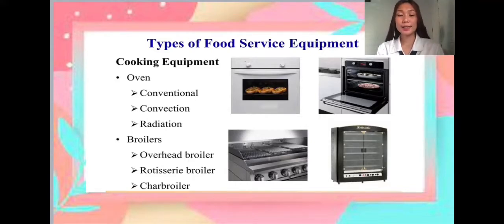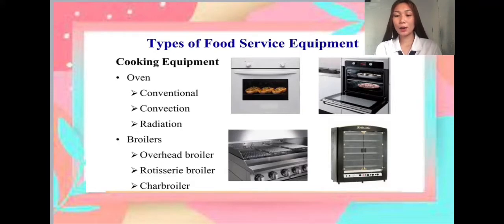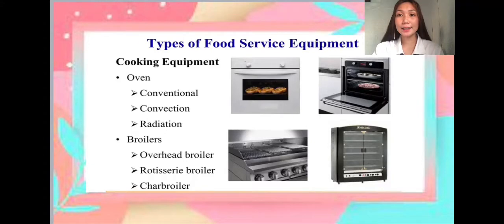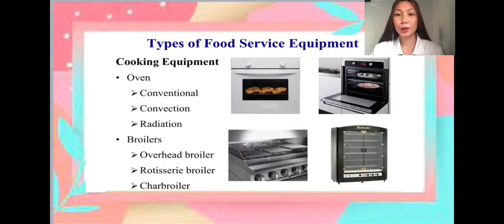Next are broilers. A broiler is an element in an oven, usually located near the top, that provides high, direct heat, much like a grill. There are three types of broilers: the overhead broiler, rotisserie broiler, and the char broiler.